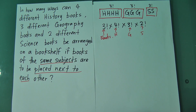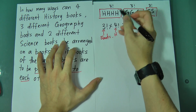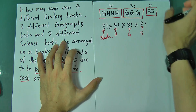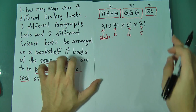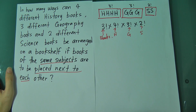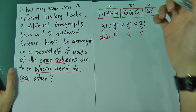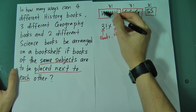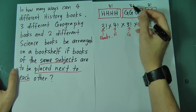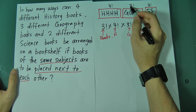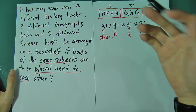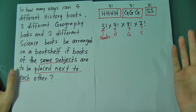For questions like this, what you always need to do is group the subject books together as one first. If you have 4 subjects and they must be next to each other, you use 4 factorial for the group arrangements. Then find how many books there are within each group. For example, if you have 5 history books, that's 5 factorial; 6 geography books is 6 factorial — because 6 books arranged among themselves is 6 factorial.